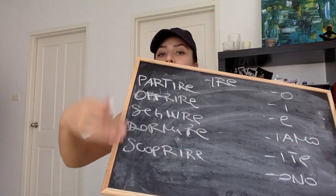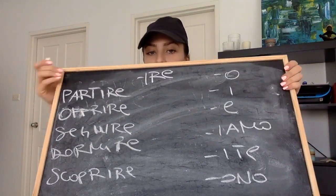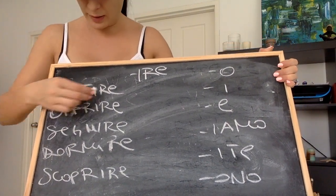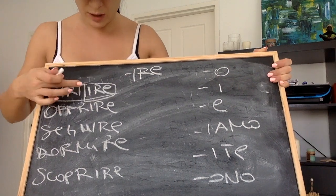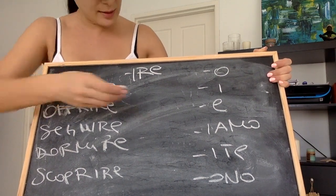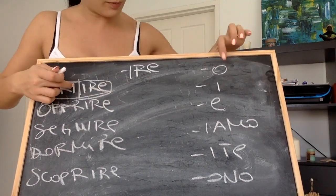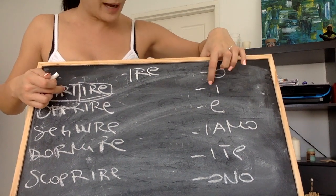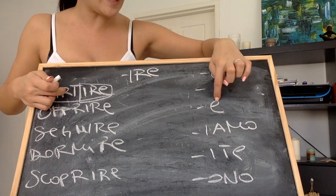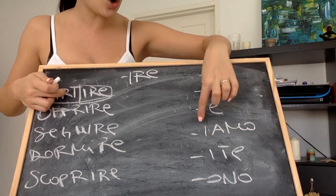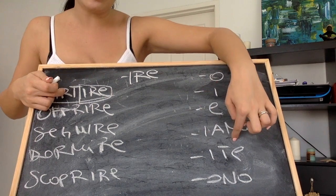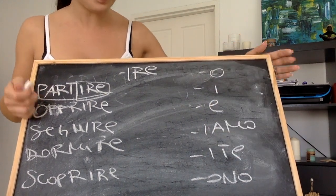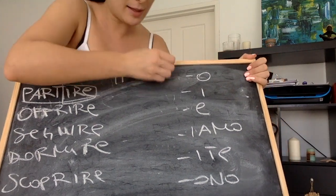If I want to say 'I leave', I take the original verb 'partire', get rid of the -ire ending, and add O: parto — I leave, io parto. You leave: tu parti. He or she: lui o lei parte. We: noi partiamo. You plural: voi partite. They: loro partono. Nice and straightforward — those are the -ire endings.